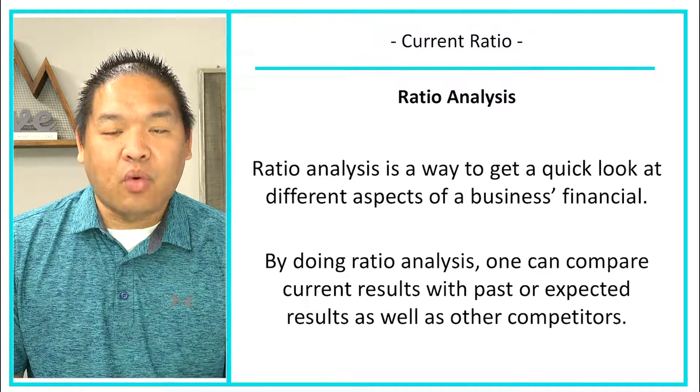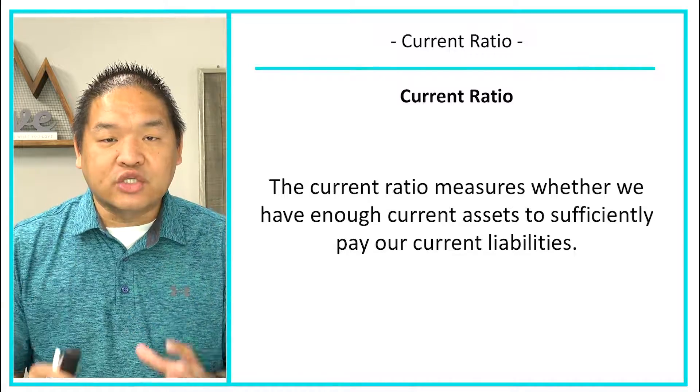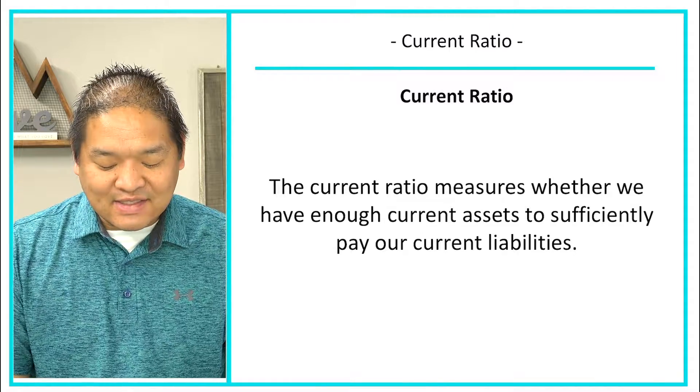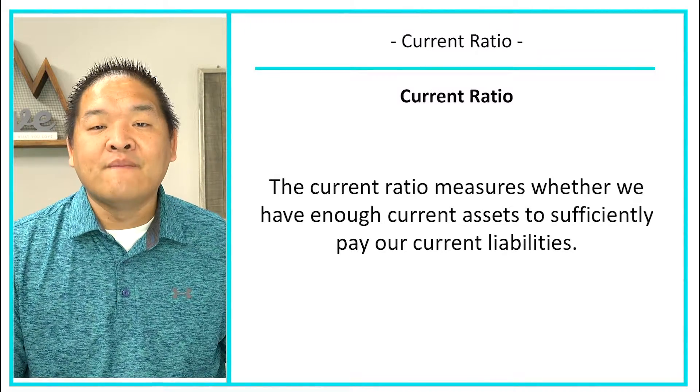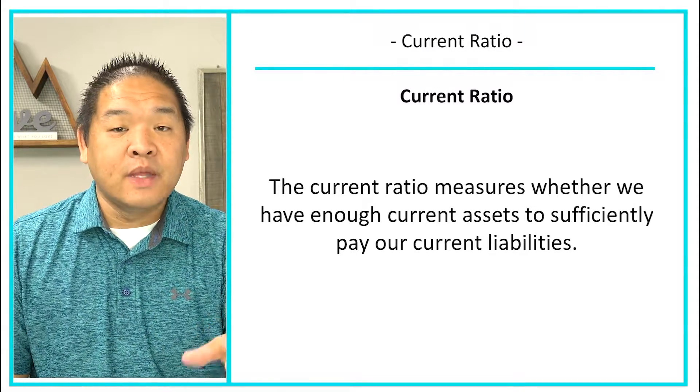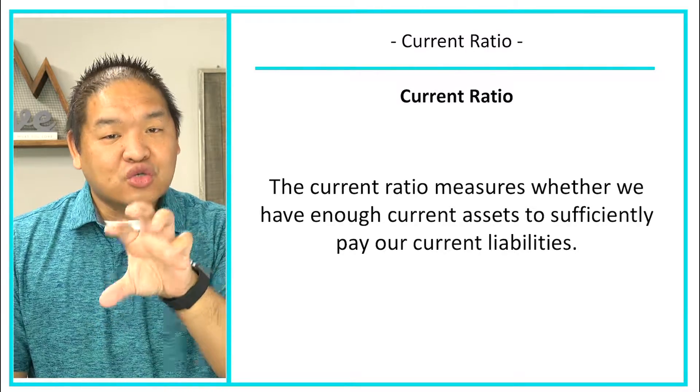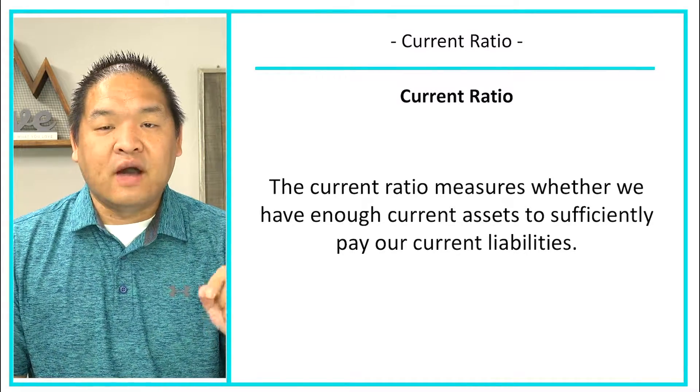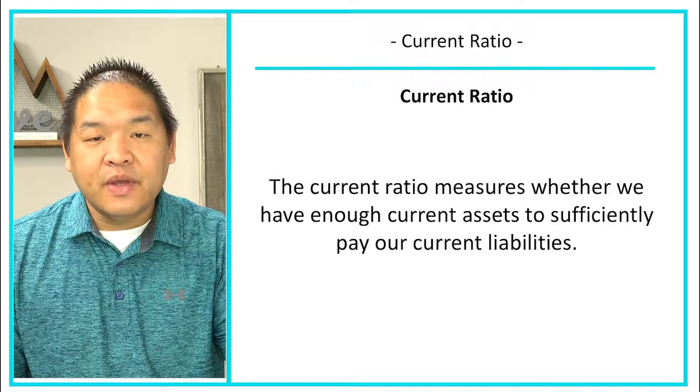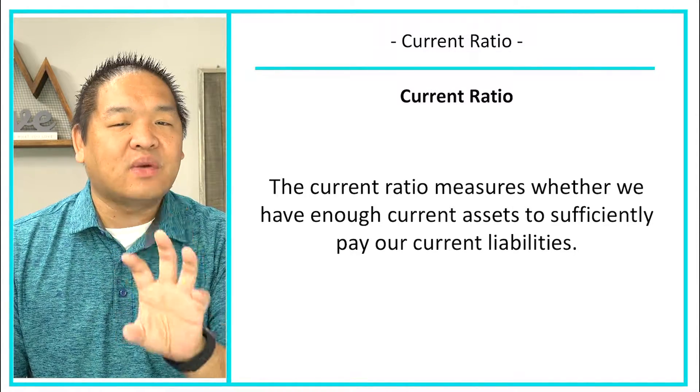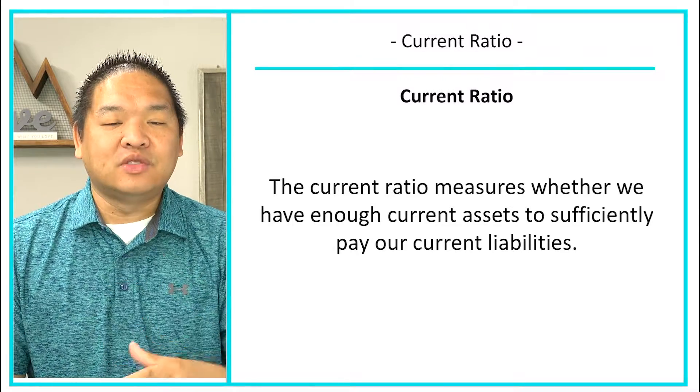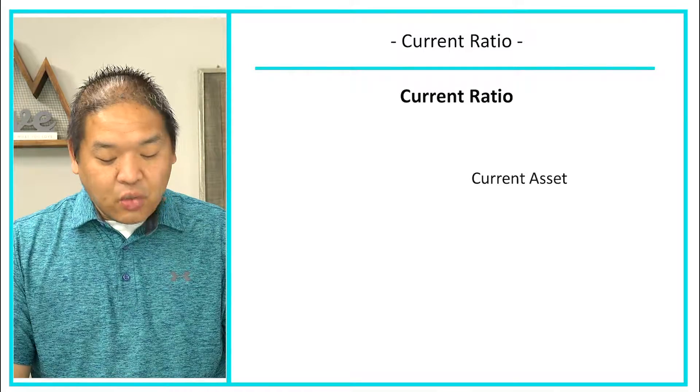Now let's take a look at the current ratio. The current ratio measures whether or not we have enough current assets to sufficiently pay our current liabilities. This is really all about can we pay our bills when they come due. Obviously this won't answer truthfully whether we can or can't, because every day we're in business we're taking in more cash which we can use to pay our bills, but this gives us a snapshot. Do we think we're going to have any issues if business was to stop today and we had to pay those bills today?